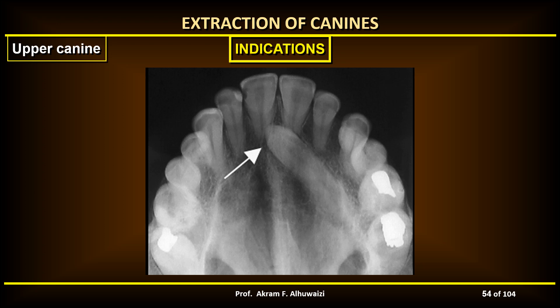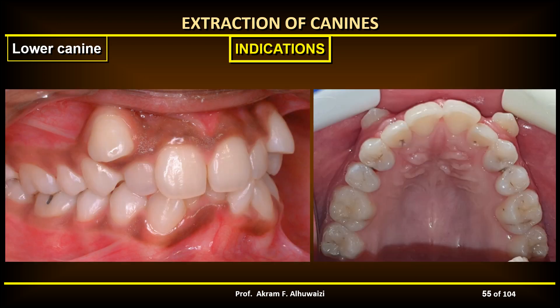Upper canines develop far away from their final location and have a long path of eruption from their developmental site to their final position in the oral cavity. Therefore they are commonly impacted or ectopic, and their alignment is quite difficult and sometimes even impossible. When an upper canine is completely extruded from the arch with satisfactory contact areas between the lateral incisor and the first premolar, extraction of the canine may be considered — especially since the canine is wider than the four, requires more space, and retracting it back will lose anchorage.